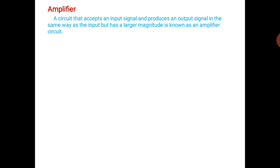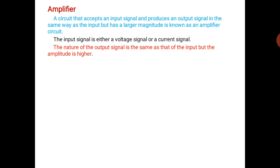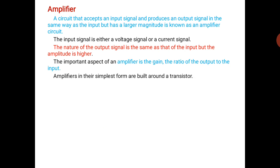A simple example is using amplifiers for transmission of sound from low level to high level. The input signal is either a voltage signal or current signal. The nature of the output signal is the same as that of the input, but the amplitude of that signal is higher.